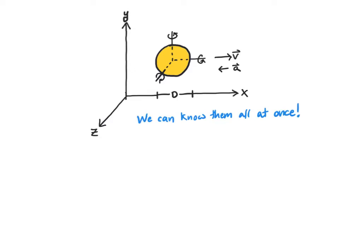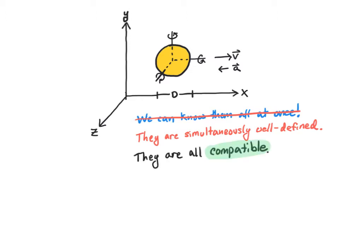In other words, it is possible to know where the ball is, how fast it's spinning, how fast it's moving, and in what direction it's accelerating — all at the same time. Knowing one of them doesn't affect our ability to know the other. A better way of phrasing this is that all of these variables are simultaneously well-defined. This is what it means to be compatible variables. The concept of compatibility is only about a hundred years old, because in classical physics, all variables are inherently compatible with each other.